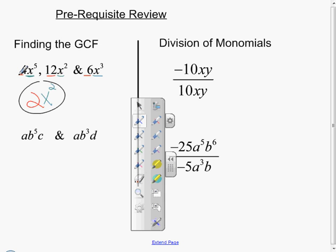In this second example, we don't have any coefficients, so I'm just going to look at a and a and realize that the GCF there is a. The exponent in both of them is 1, so if I take the smallest exponent, it's a tie. And then for b^5 and b^3, it's going to be b^3 because it's smaller. And then I notice that the c is not common. It's only in one factor, so I skip it, and I see that the d is not common. It's only in one factor, so I skip it. So the GCF here for both these terms, ab^5c and ab^3d, it's just ab^3.